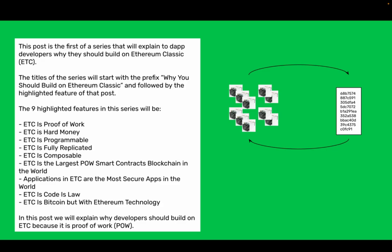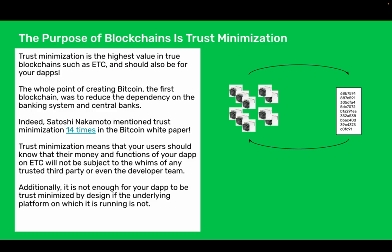In this post we will explain why developers should build on ETC because it is Proof of Work (POW). The purpose of blockchains is trust minimization. Trust minimization is the highest value in true blockchains such as ETC and should also be for your dApps.